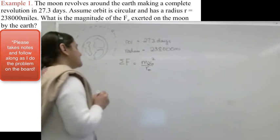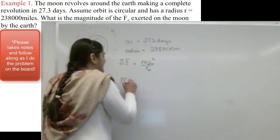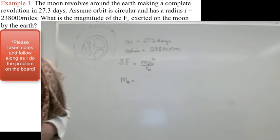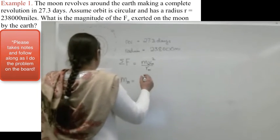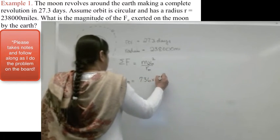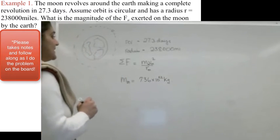Now, this is going to be sigma F. So what is the mass of the Moon? Well, I can look up in the appendix what the mass of the Moon is. And that according to Appendix C is 7.36 times 10 to the 22 kilograms. That's good.